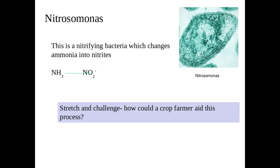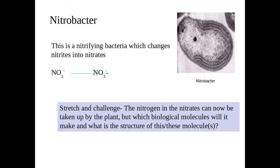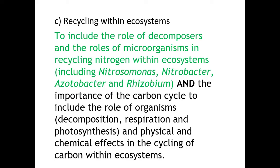We have Nitrosomonas, and these are nitrifying bacteria which change ammonia into nitrites. So you need to know these formulas, you need to know the chemical breakdown of each one of these. Nitrobacter, and this is nitrites into nitrates. Nitrates, don't forget nitrates, is the only way in which plants can take up the nitrogen from the soil. So that's the nitrogen cycle.